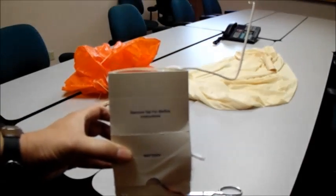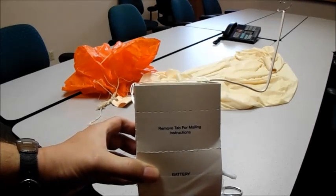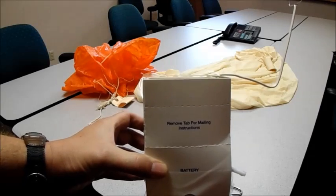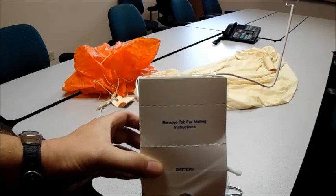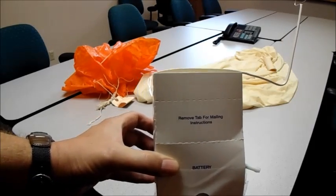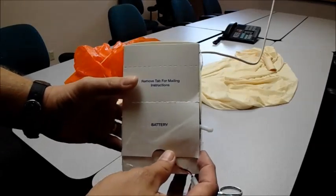This is called a radiosonde which we send up twice a day at our office. As you see on the front there, it says remove tab for mailing instructions. So if you find this out in the field, the first thing you want to do is take the battery out.